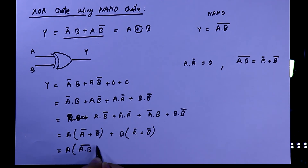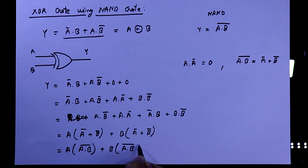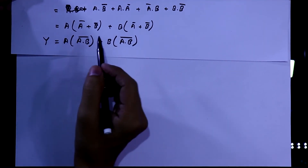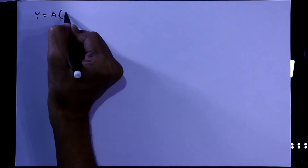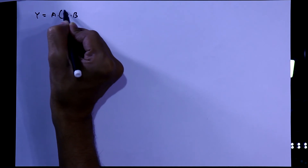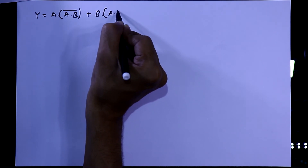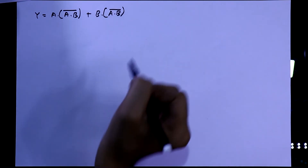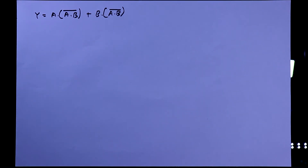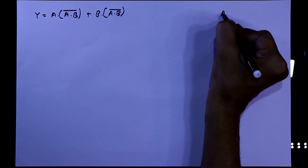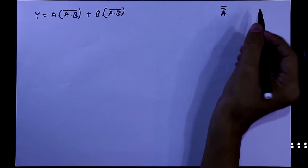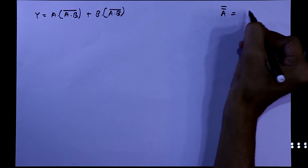So we can write A-bar plus B-bar as A dot B whole bar. We also know that double complement: A double-bar is equal to A.